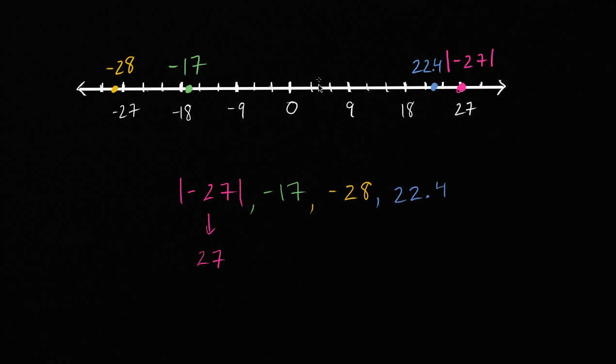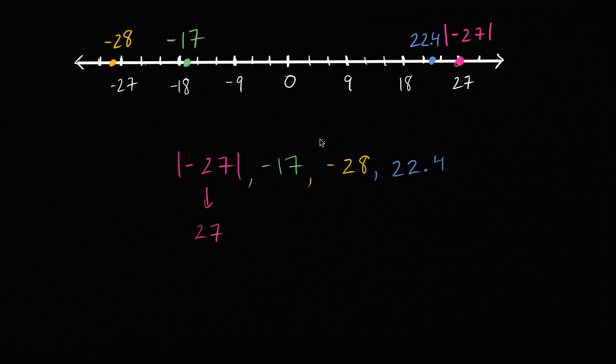So if we want to sort from least to greatest, we just start at the left end of the number line. The smallest is negative 28. Then we go to negative 17, then 22.4, and then the absolute value of negative 27. And we are done.